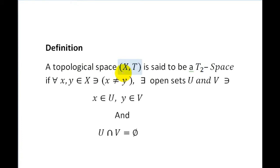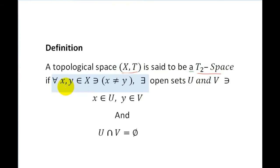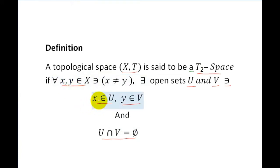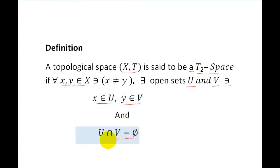A topological space X is said to be a T2 space, or Hausdorff space, if for all X, Y belonging to X such that X is not equal to Y, there exist open sets U and V such that X belongs to U, Y belongs to V, and U intersection V is equal to the empty set — meaning open sets U and V are disjoint.